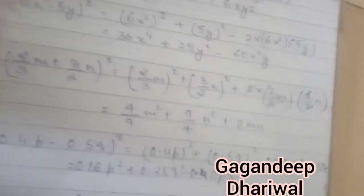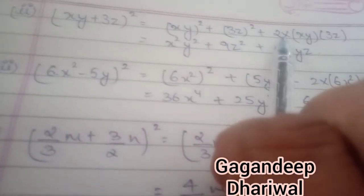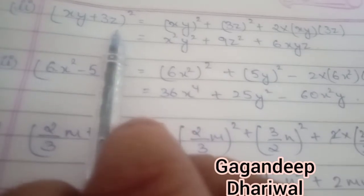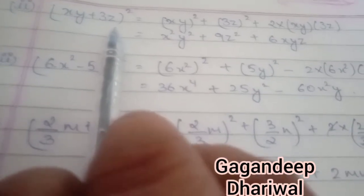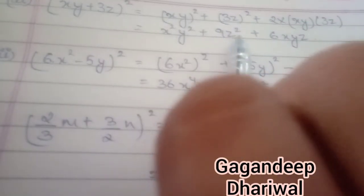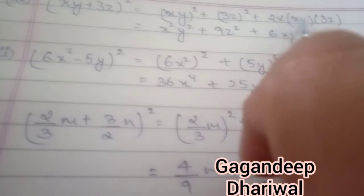Moving to the second question: (xy + 3z) whole square. Using the identity a square plus b square plus 2ab, where a is xy and b is 3z, we get x square y square plus 9z square plus 6xyz.